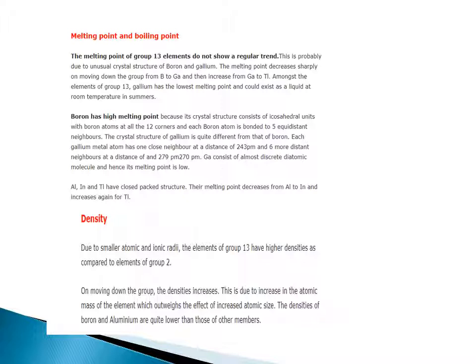Density. Due to smaller atomic and ionic radii, the elements of group 13 have higher densities compared to elements of group 2. Moving down the group, density increases due to the increase in atomic mass, which outweighs the effect of increased atomic size. The densities of boron and aluminium are quite lower than those of the other members.